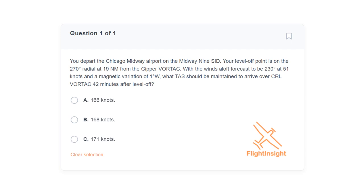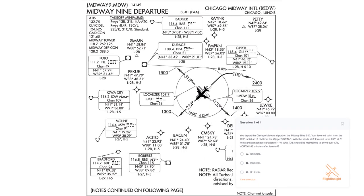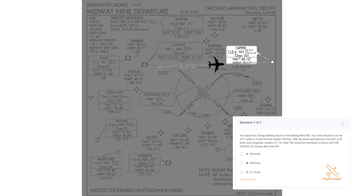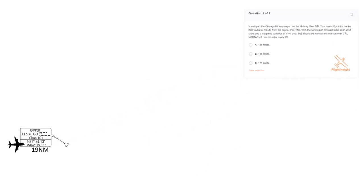We'll need to figure out our ground speed required to make CRL Vortac in 42 minutes, so let's first calculate our distance. Starting with our departure, the Midway 9 — we depart from the runway, climb and turn to intercept the 270 radial off the Gipper VOR, continue the climb, and level off when we're 19 miles from Gipper. We then join the en route phase of our flight.